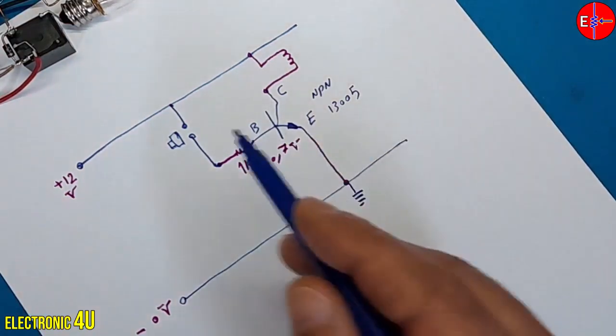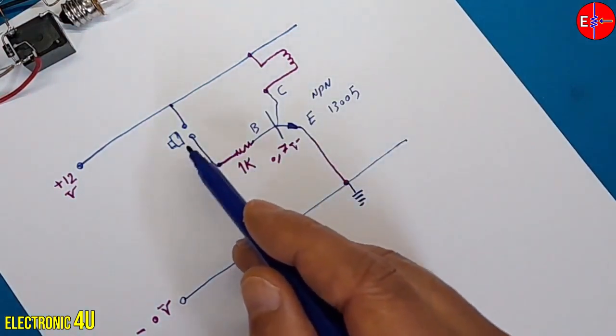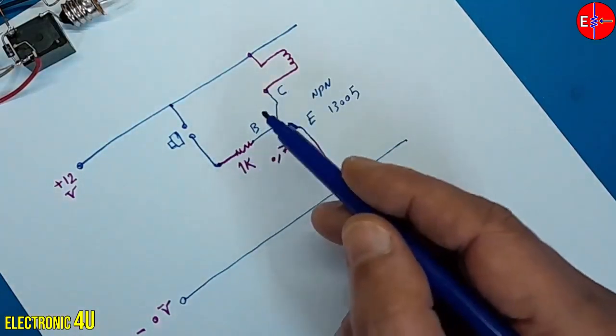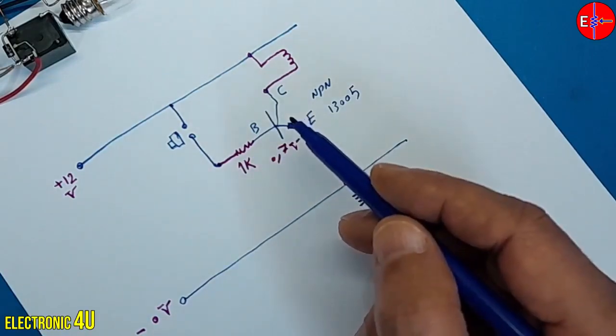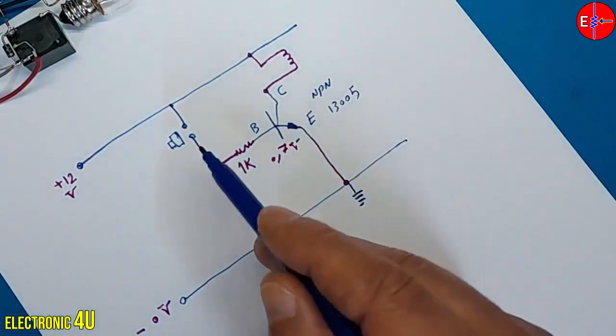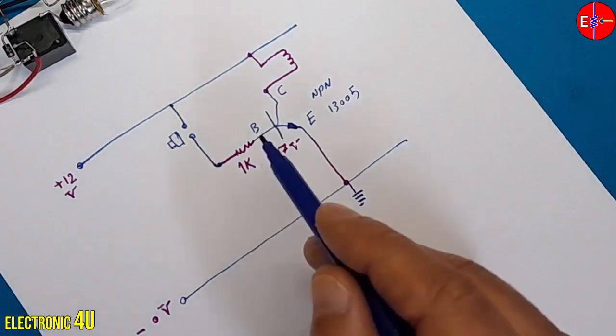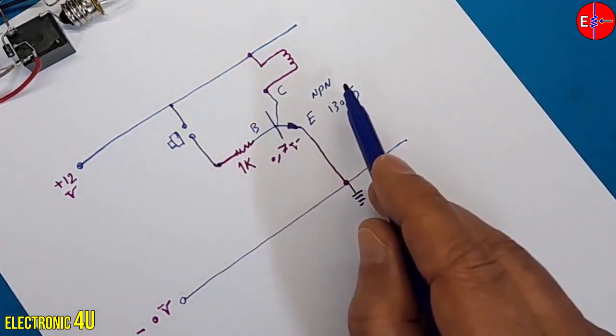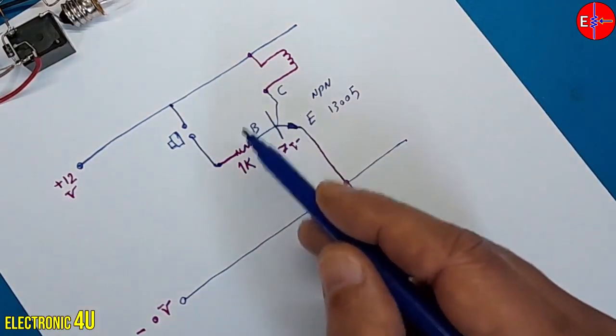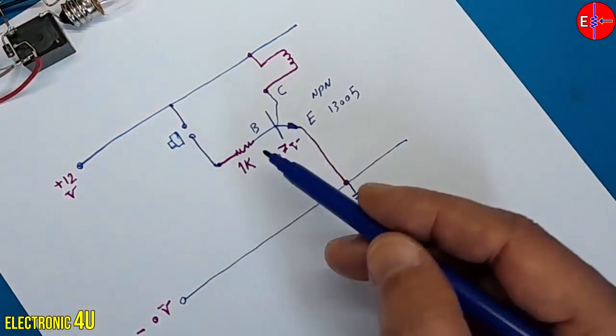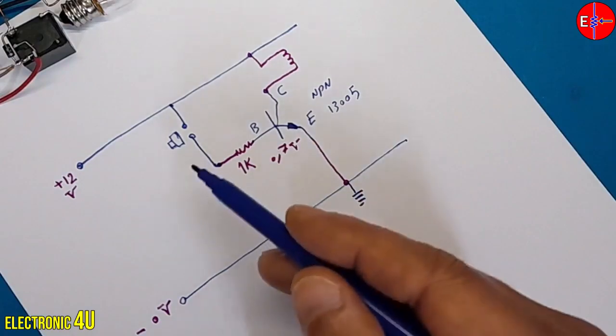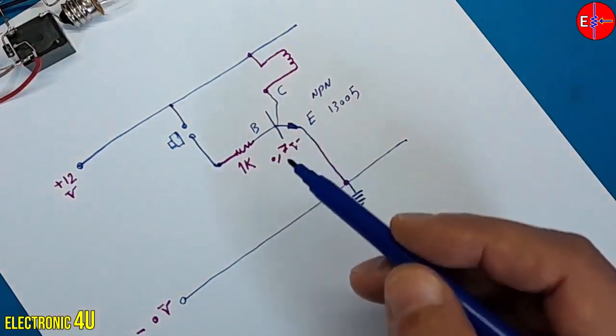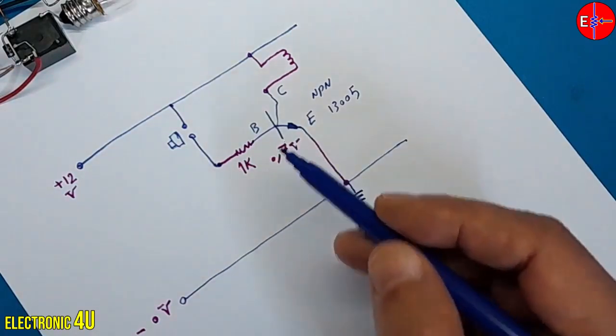If I press the button, the transistor turns on and the relay activates. The relay can activate any device. However, if I release the button, the transistor turns off and the relay deactivates, meaning the circuit is only active when the button is pressed. Now I want to consider a time for the transistor to stay on. All we need is to use a capacitor.